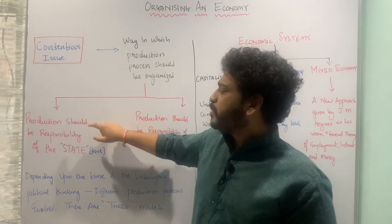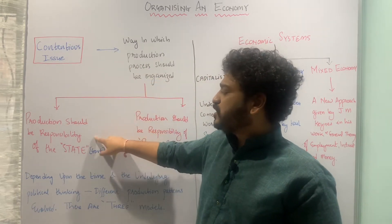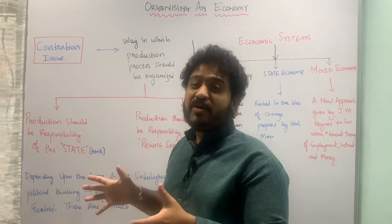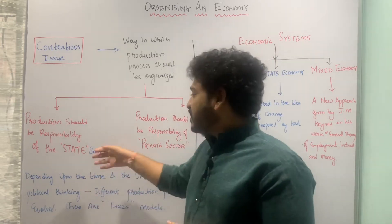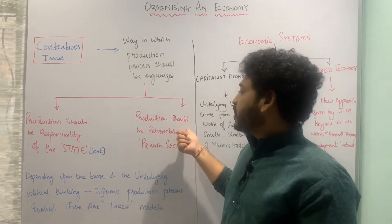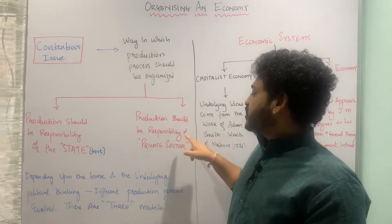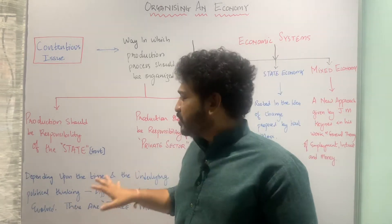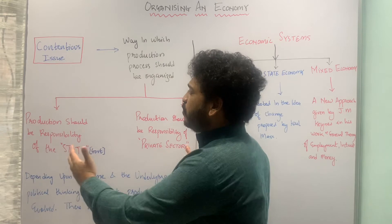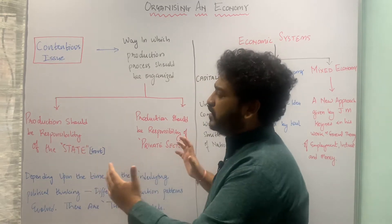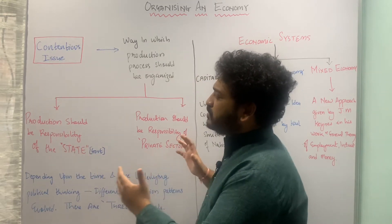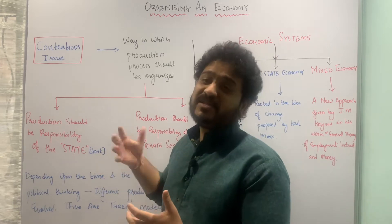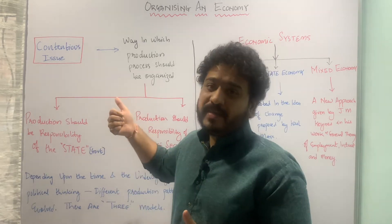The first view is that production should be the responsibility of the state, meaning the responsibility of government only. The second view is that production should be the responsibility of the private sector alone. These were the two distinct positions creating a contentious issue in the minds of human beings.